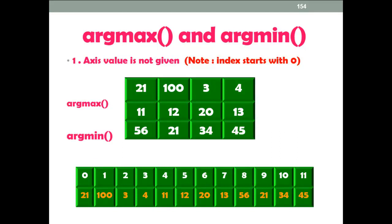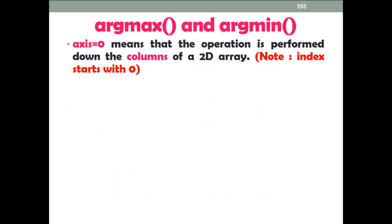Next, argmin without an axis value. The array is considered as a flattened 1D array. The output is 2, because the minimum number is available at index number 2. Please remember our index starts with 0, so here the output is 2.